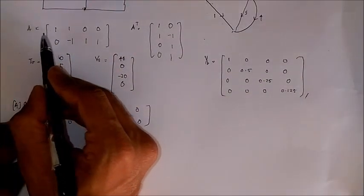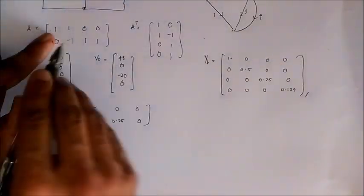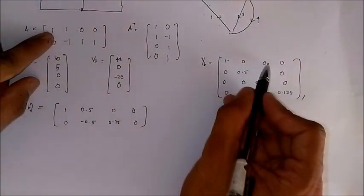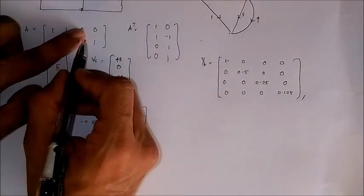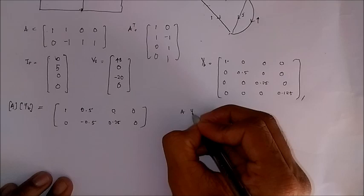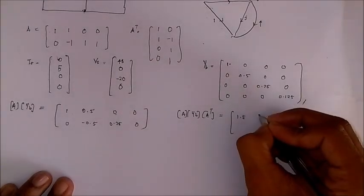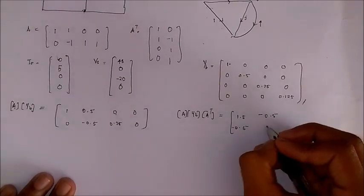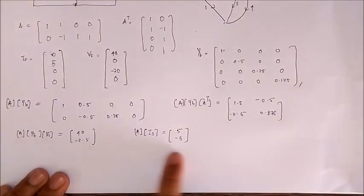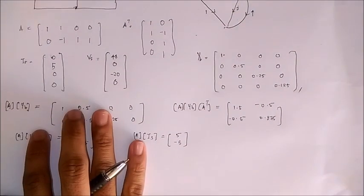Carrying out matrix multiplication: A·YB·A-transpose gives the matrix with values 1.5, minus 0.5, minus 0.5, and 0.875. We also calculate A·YB·VS to get 40 and minus 2.5, and A·IS to get 5 and minus 5.